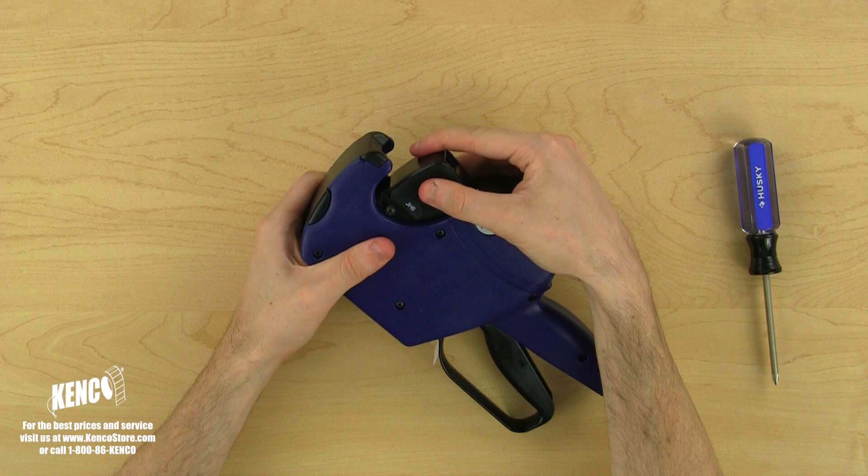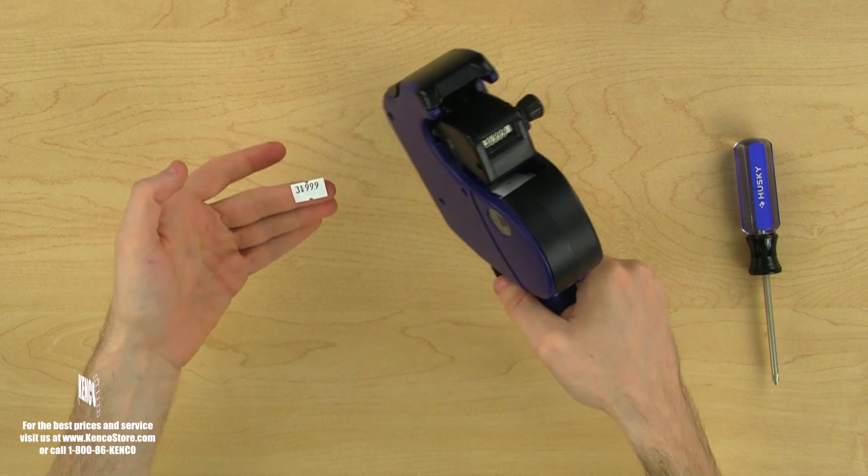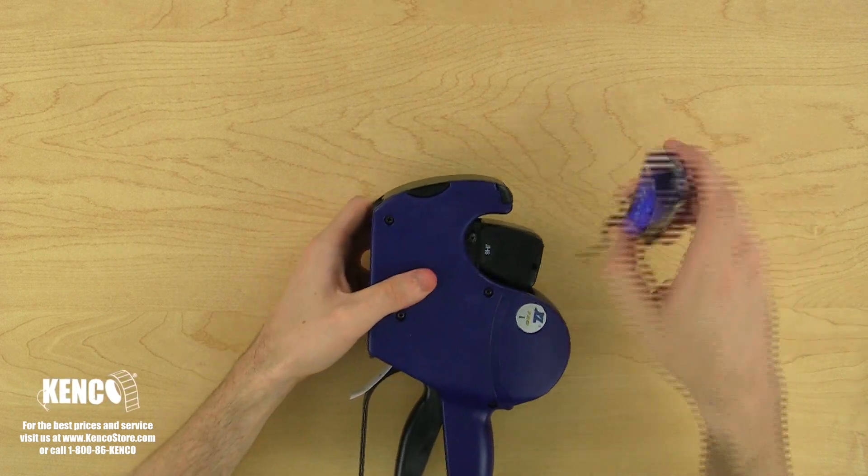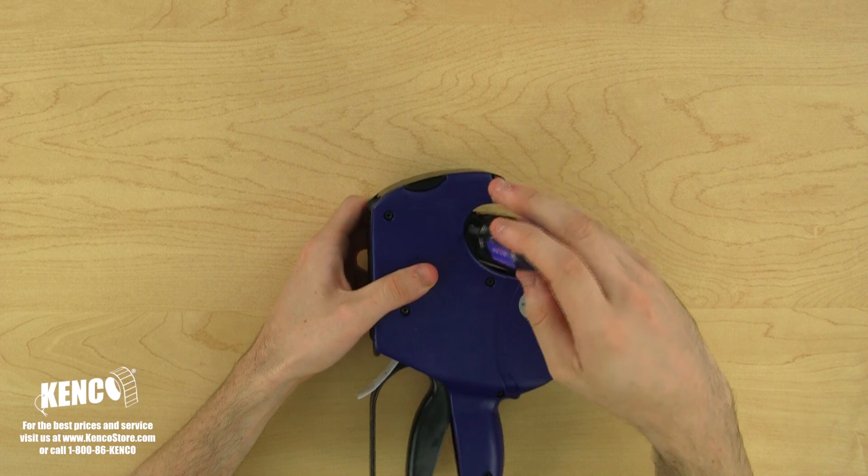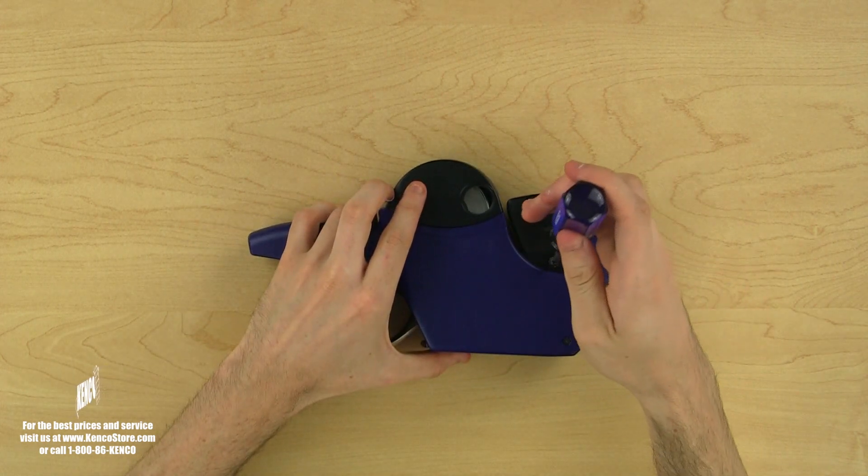Once the screws are loose, we can slide the print head in the direction we need, either up or down. Then, we'll test it to make sure it's lined up properly. Once the print head has been adjusted to your satisfaction, let's tighten the adjustment screws back up. You'll rarely need to make this adjustment more than once in the lifespan of your gun.